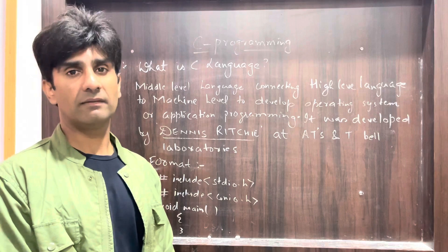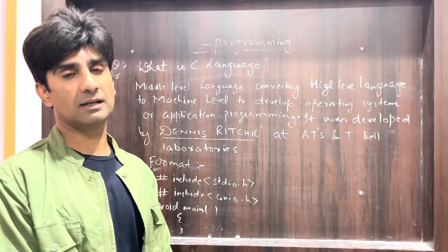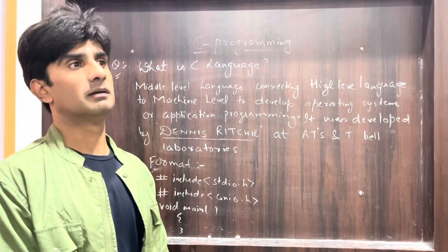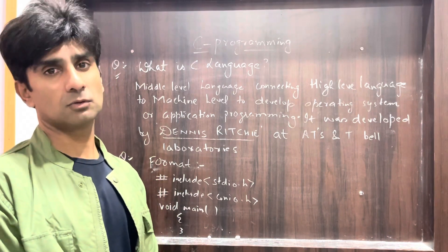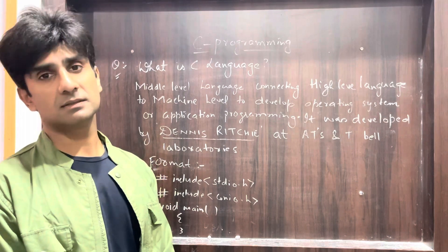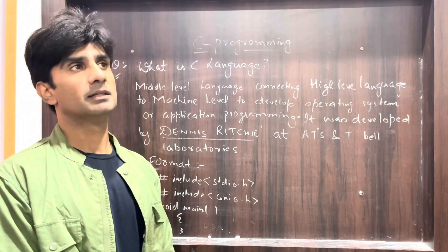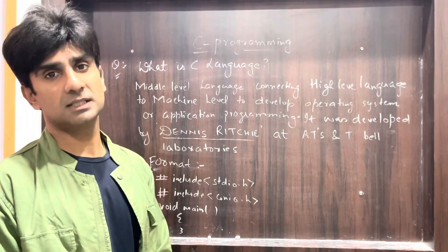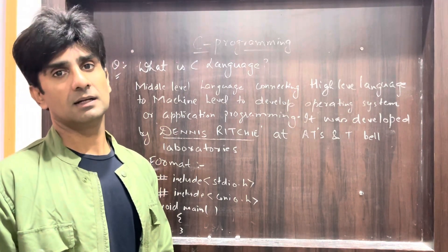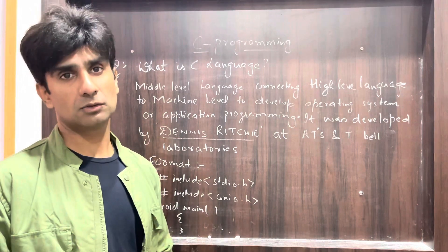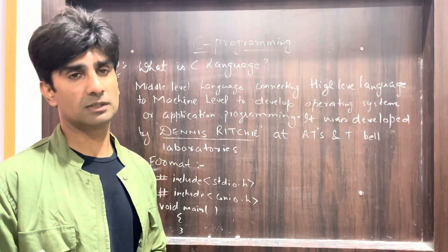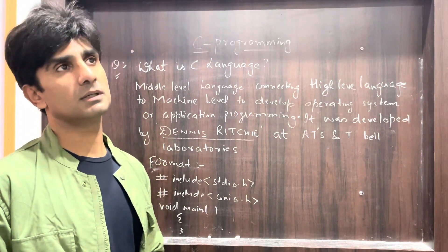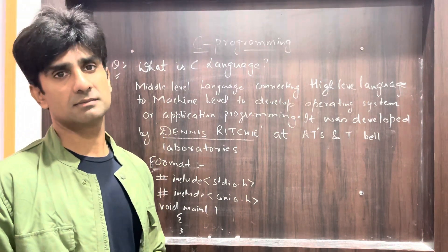C programming is a middle-level language that connects the high-level language to the low-level language. The high-level language is the user who is making the C program, and the low-level language is the machine language. So it is in between these two, connecting them so that the machine — the computer — can understand what instructions we are trying to give it.